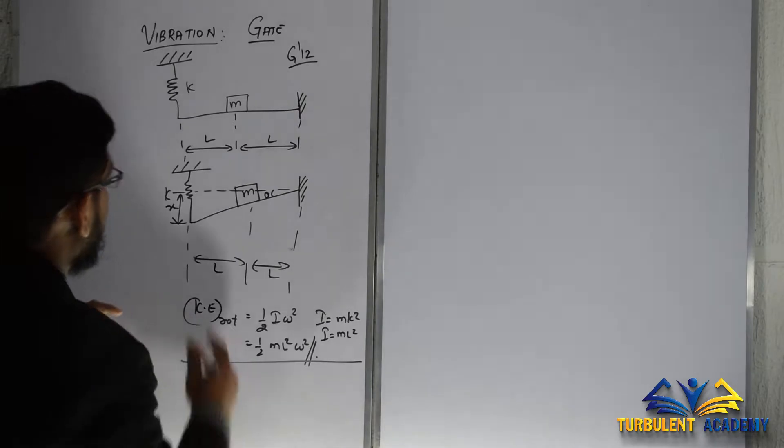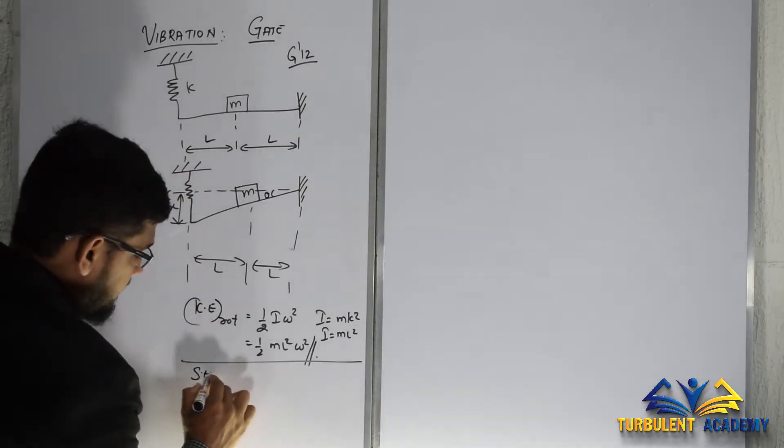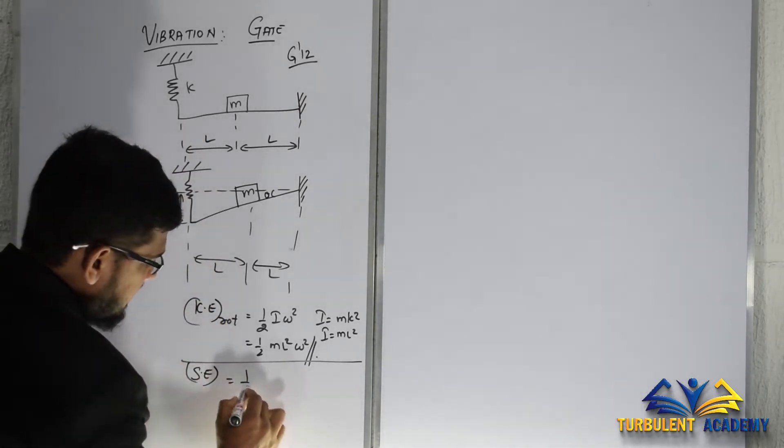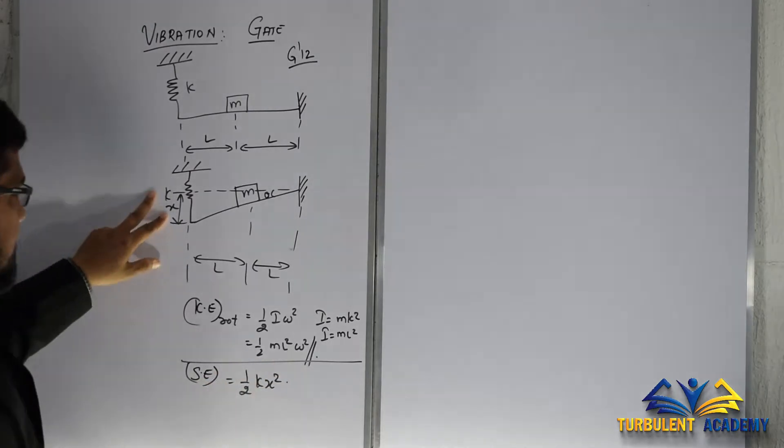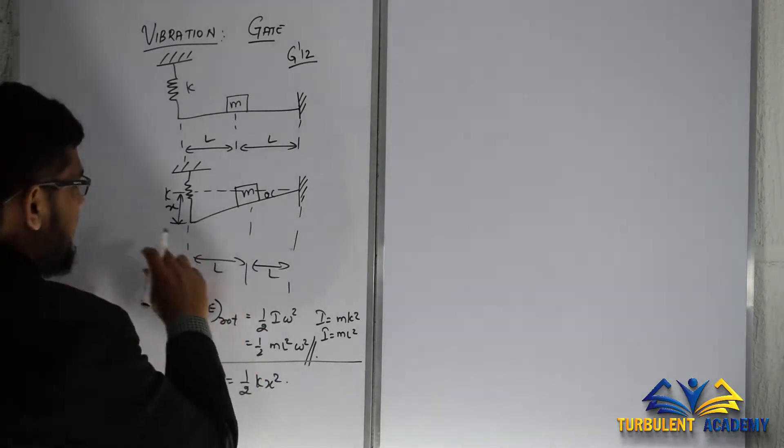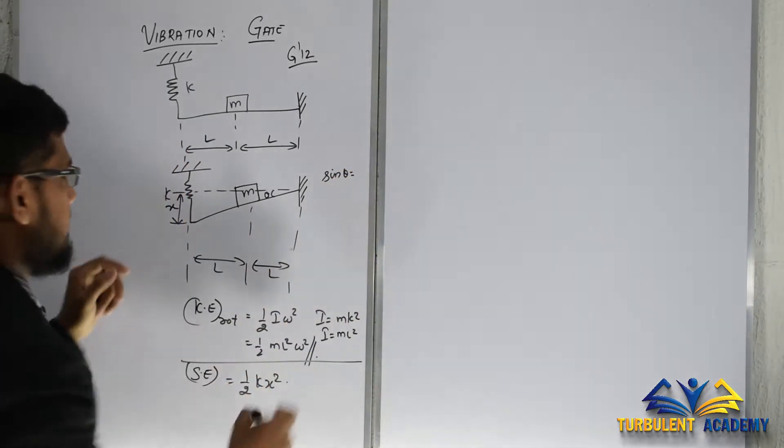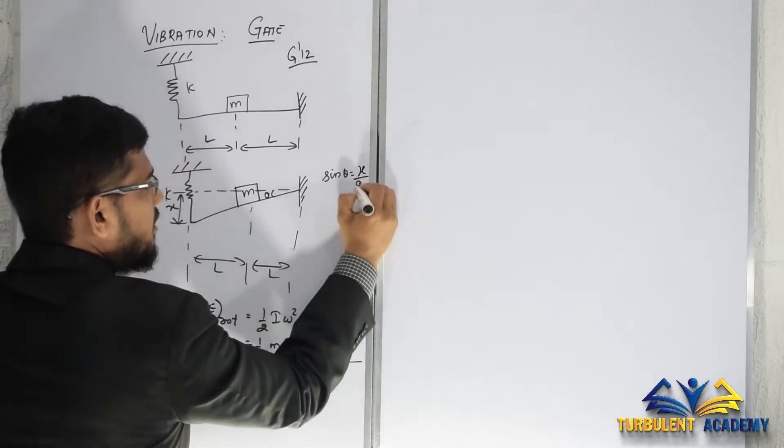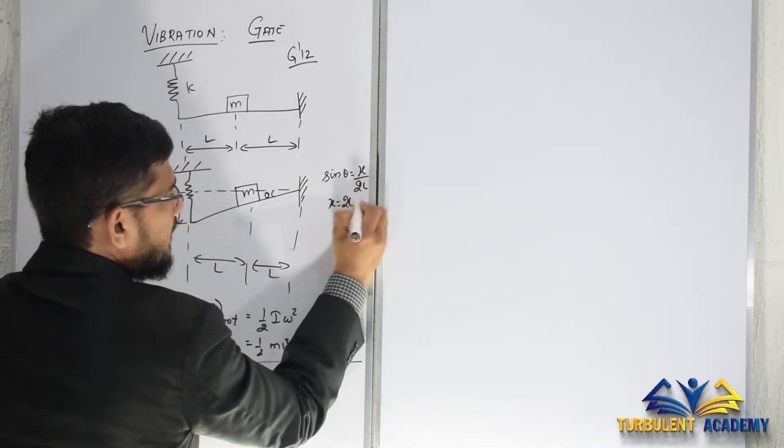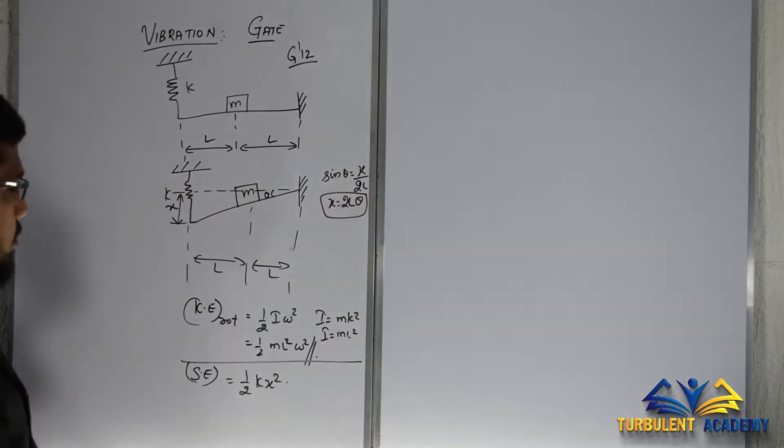Next we have the spring energy, which is half k x squared. If you solve this, sin theta equals opposite by hypotenuse, so x by 2l. X equals 2l theta.